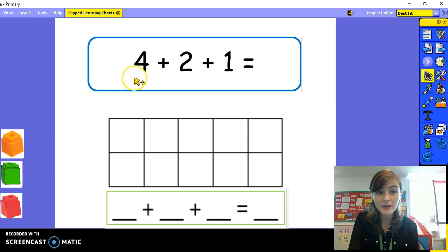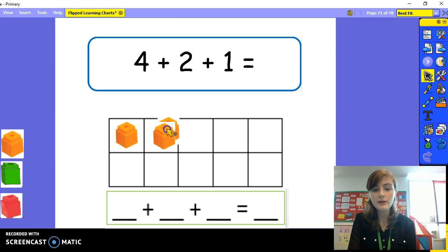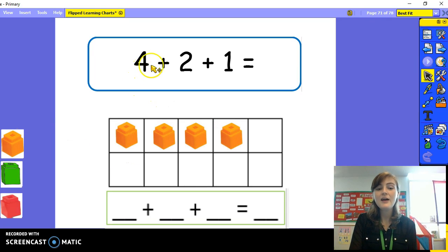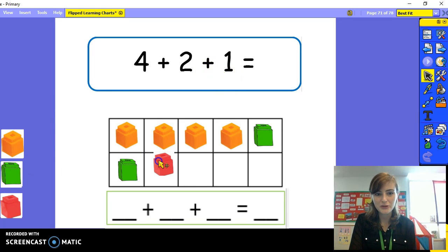First I'm going to take four orange cubes. Can you help me count? One, two, three, four. Then I am going to add two green cubes. One, two. And finally I'm going to add one pink or red cube. One. Now I have four orange cubes plus two green cubes plus one red cube. All I have to do now is count how many cubes all together to find the total or how much four plus two plus one is equal to.